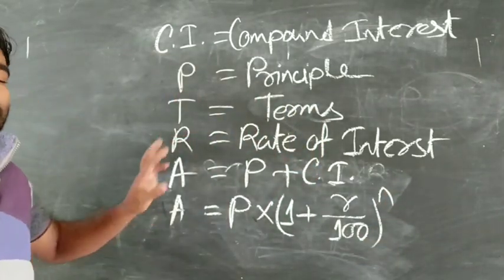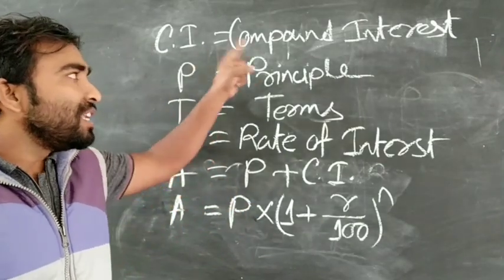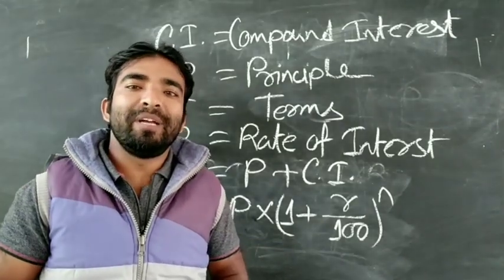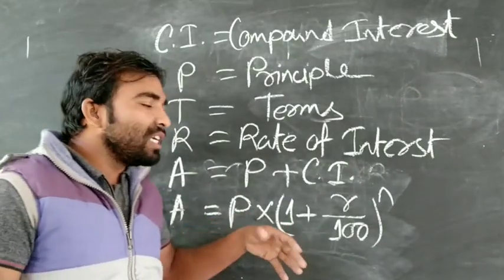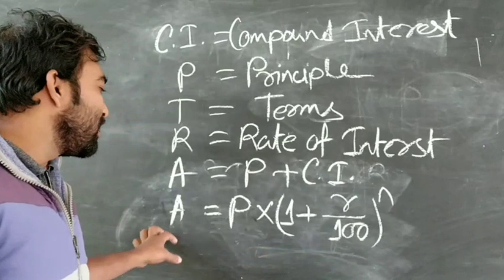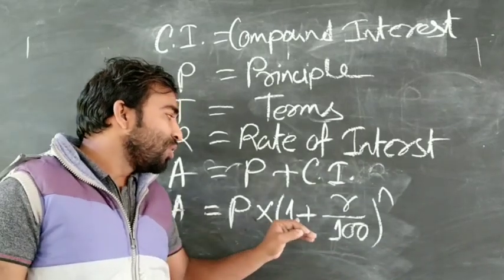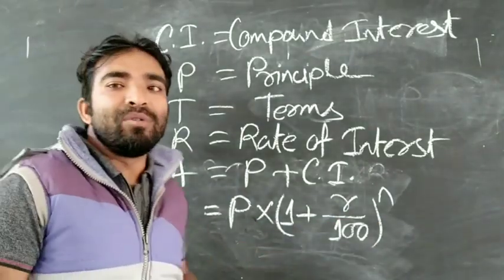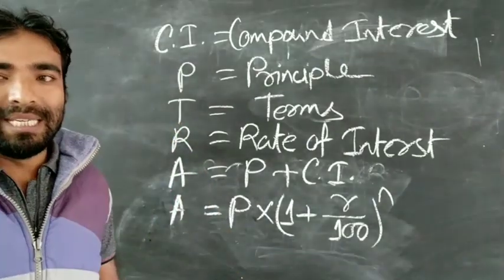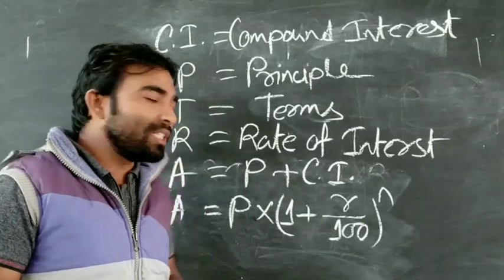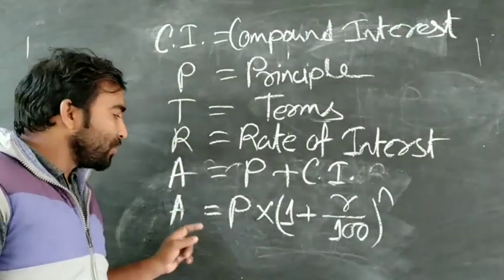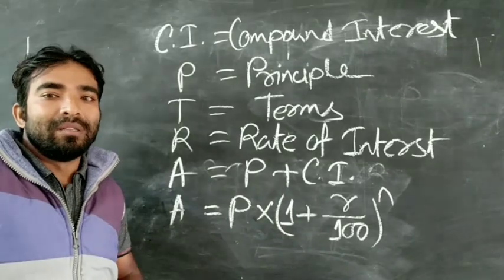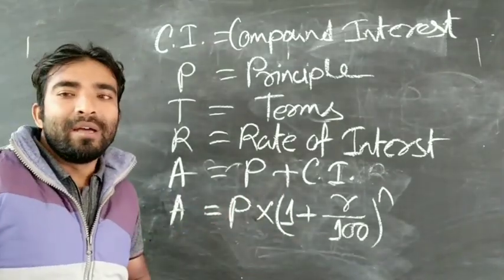In Simple Interest we can directly find SI using P × T × R / 100. But in Compound Interest, we cannot directly find CI. First we must find the Amount using A = P × (1 + R/100)^N, and then subtract the Principal from the Amount to get the Compound Interest: CI = A − P.